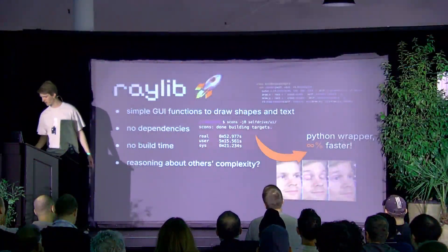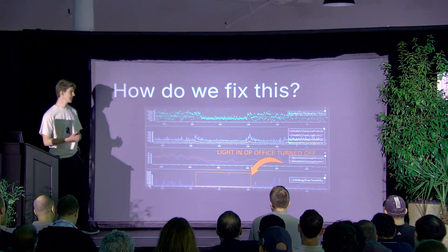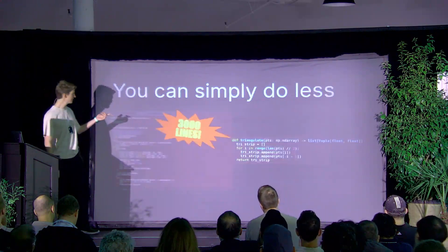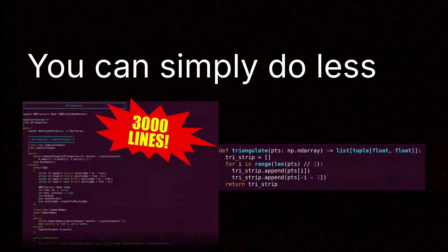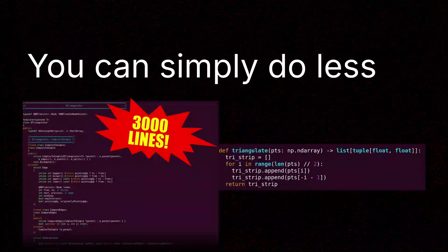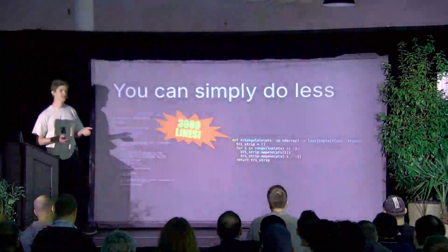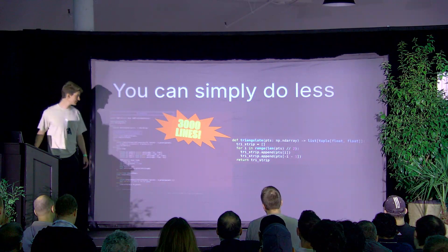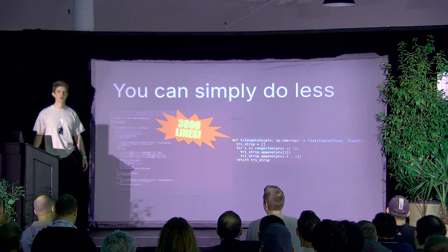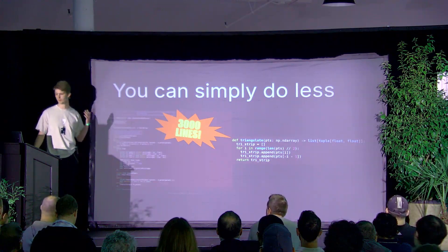How did we fix the original problem where the model was outputting lane line geometry that Qt didn't know how to handle? You can simply do less. Qt has a huge 3,000-line function just to triangulate polygons — they might be inverted or convex or whatever — and we don't need to support any of that. We just need a simple four-line for loop; that's all you need. It's way simpler, it's consistent. That's one of the practical applications of switching to a smaller library where you can control the complexity yourself and remove the bugs yourself.